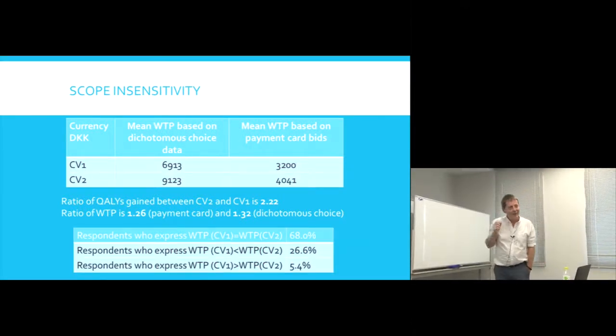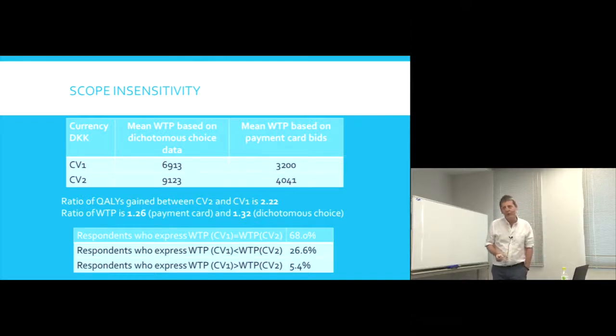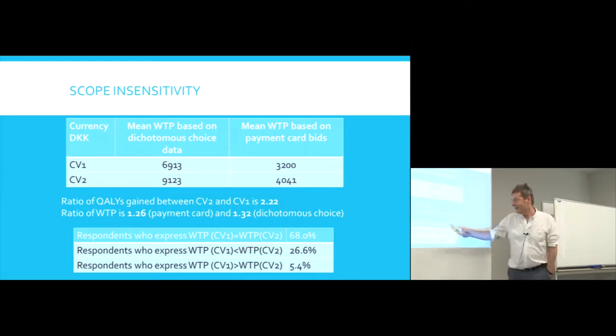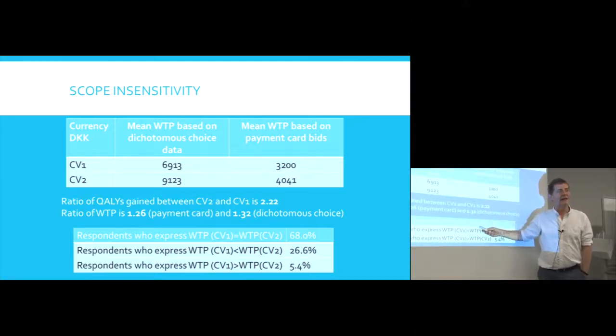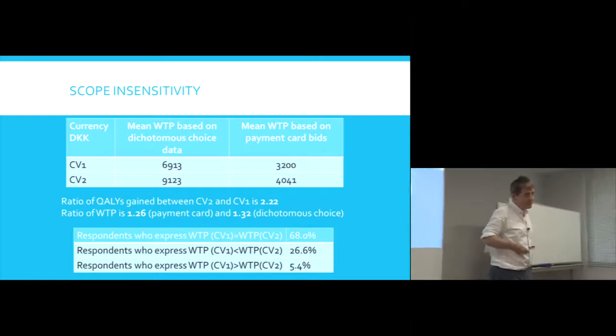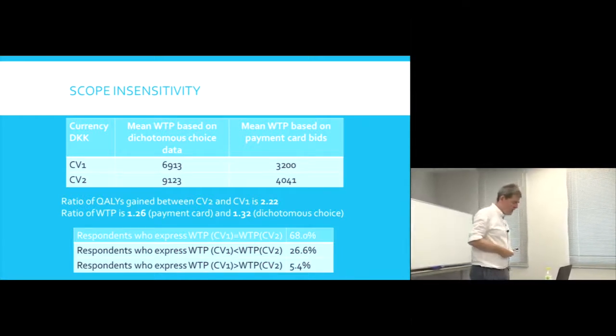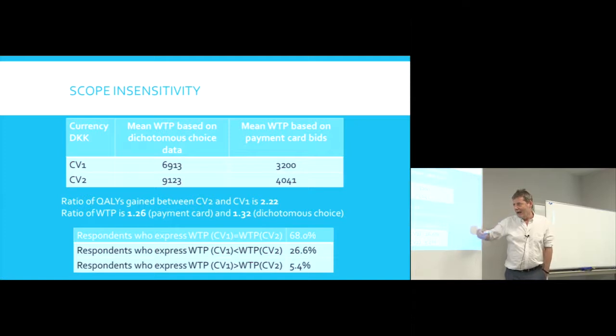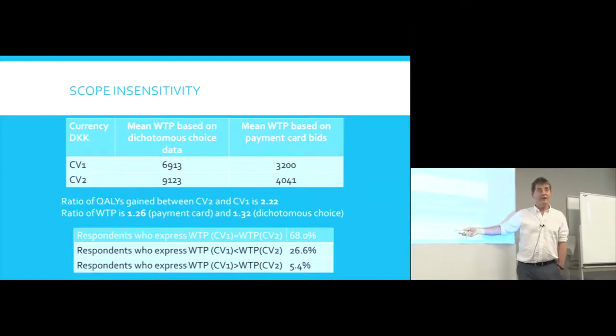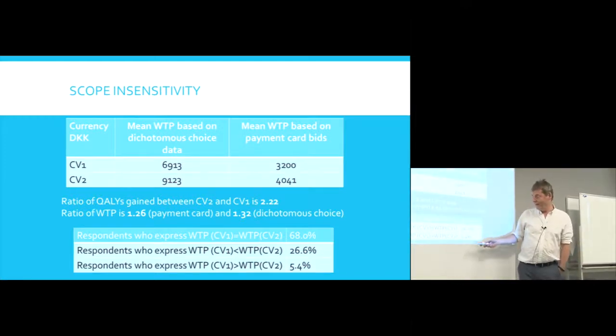They then looked at the individual valuations of the two programs, and they found that 68% of the respondents gave the same willingness to pay. Now remember, one program is producing twice, more than twice the benefit of another program. But 68% gave exactly the same willingness to pay. 26.6% at least got it in the right direction. They had a willingness to pay for CV1 which was less than CV2. And 5% didn't even get the direction right. 5% valued CV1 more highly than CV2.